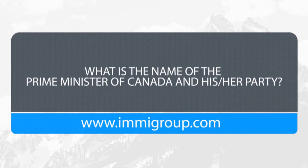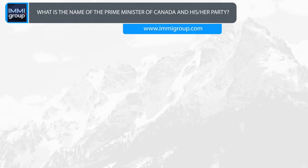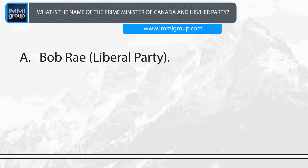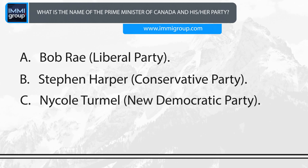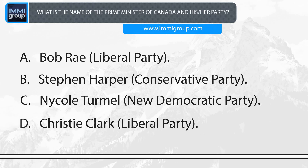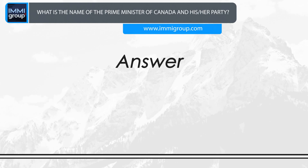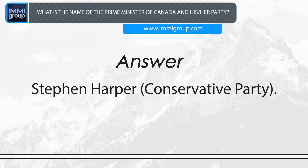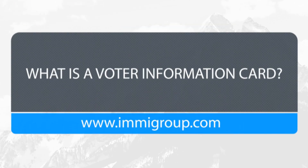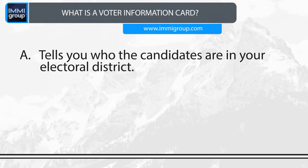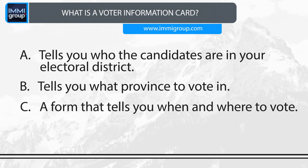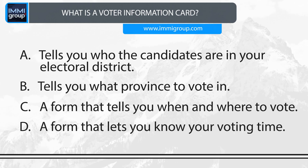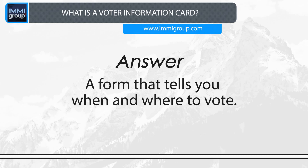What is the name of the Prime Minister of Canada and his or her party? A. Bob Ray, Liberal Party. B. Stephen Harper, Conservative Party. C. Nicole Turremel, New Democratic Party. D. Christy Clark, Liberal Party. Answer: Stephen Harper, Conservative Party. What is a voter information card? A. Tells you who the candidates are in your electoral district. B. Tells you what province to vote in. C. A form that tells you when and where to vote. D. A form that lets you know your voting time. Answer: A form that tells you when and where to vote.